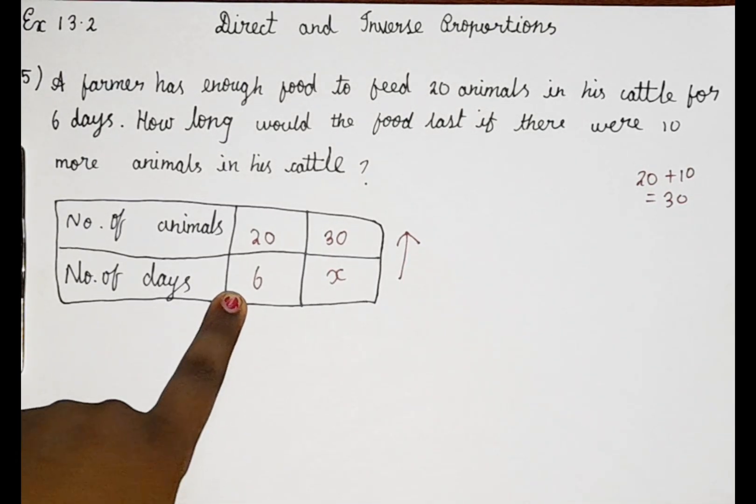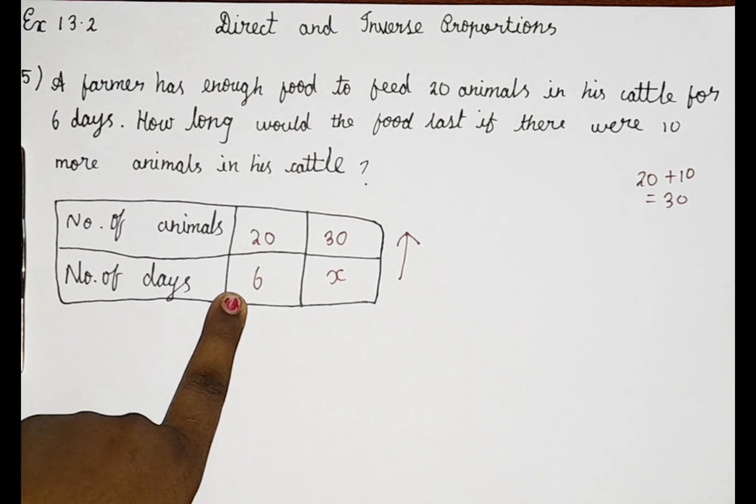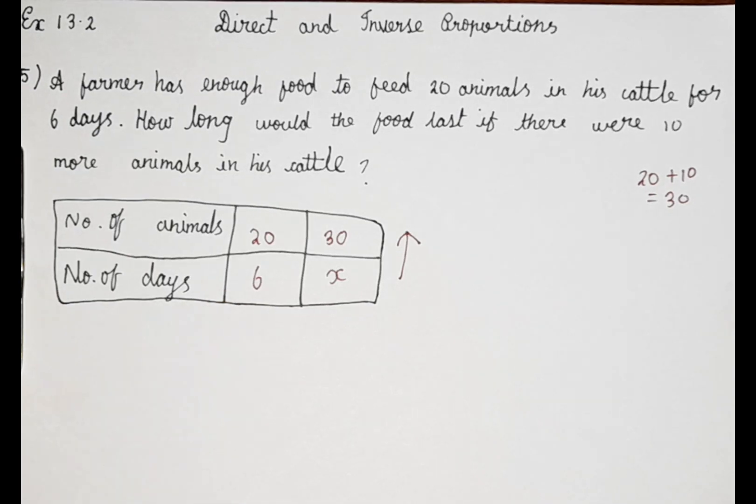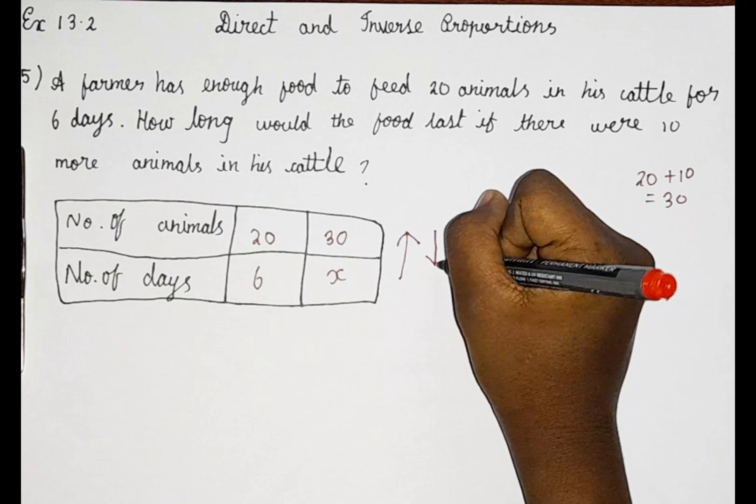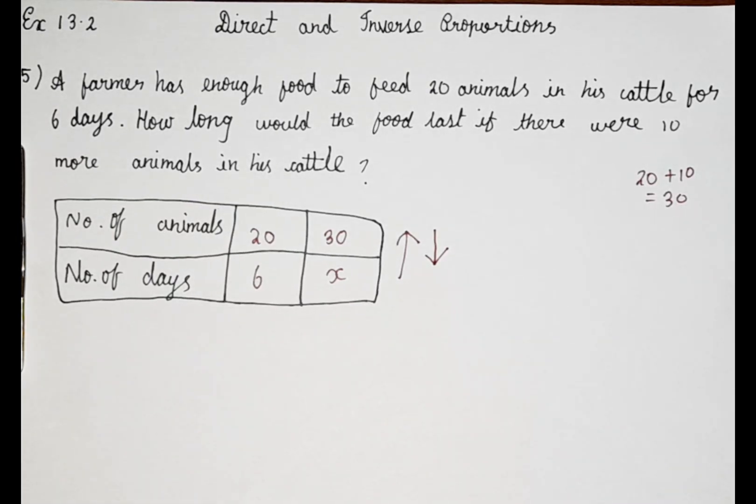Because already for 20 animals, he can only feed for 6 days. Then if 30 animals, it will decrease the number of days. If it is decreasing and increasing in that proportion, it means it is inverse proportion.